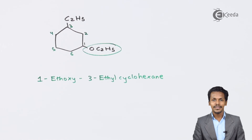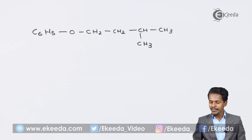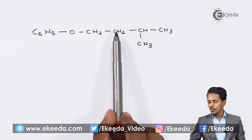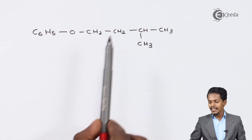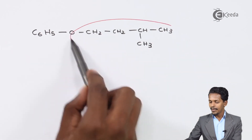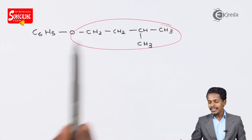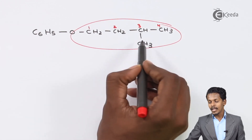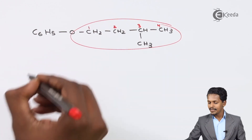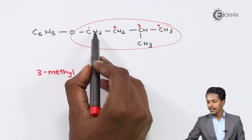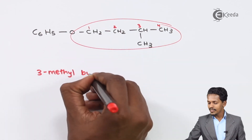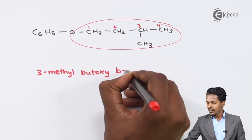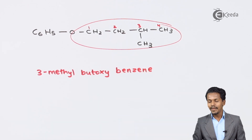The final ether has a phenyl group on one side and a chain of 5 carbon atoms on the other. The 5-carbon chain is considered the alkoxy group. Within it, carbon 1, 2, 3, 4 — and on carbon 3 there is a methyl group. Counting the prefix: methane, ethane, propane, butane — so this is 3-methylbutoxy. The phenyl ring is benzene. Therefore the IUPAC name is 3-methylbutoxybenzene.